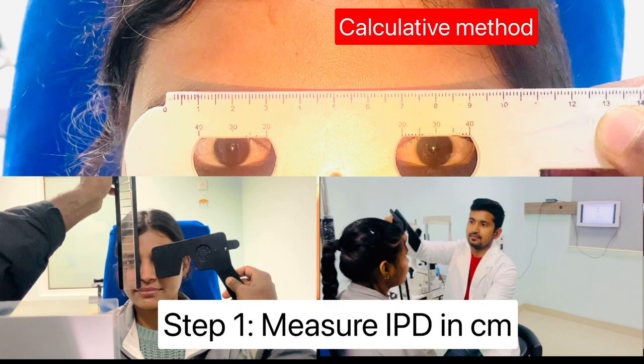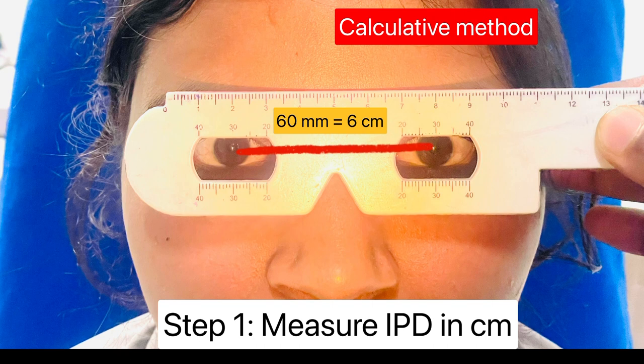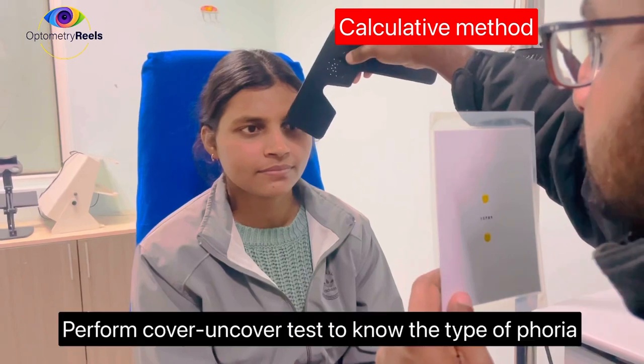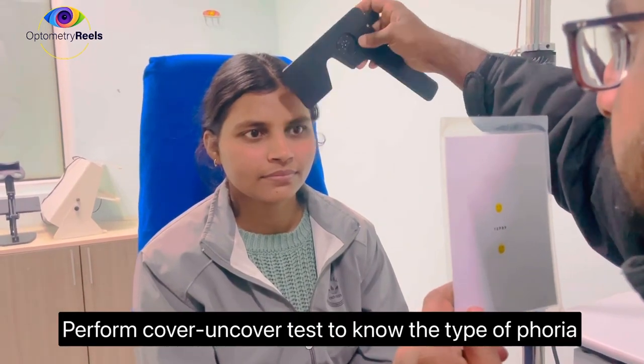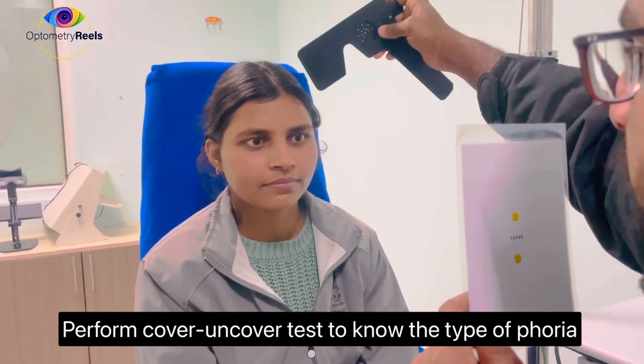Thus the calculated method for AC/A ratio can be understood in three steps. Step 1 is to measure the IPD in centimeters. Now perform cover-uncover test to find out the type of phoria.